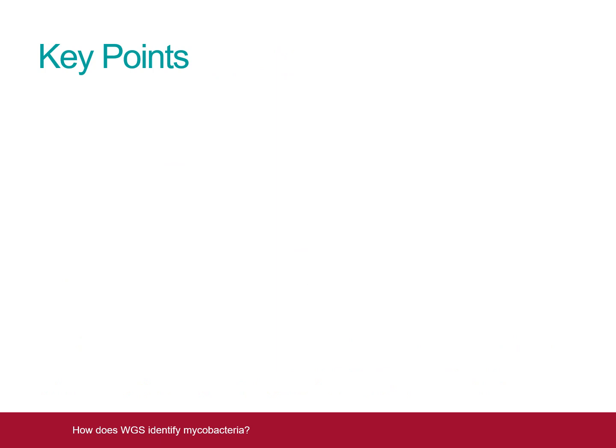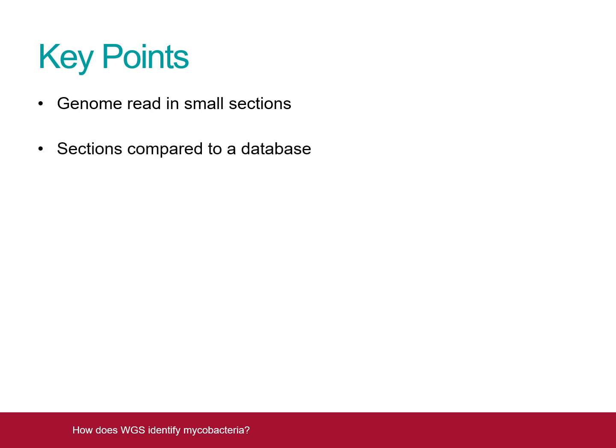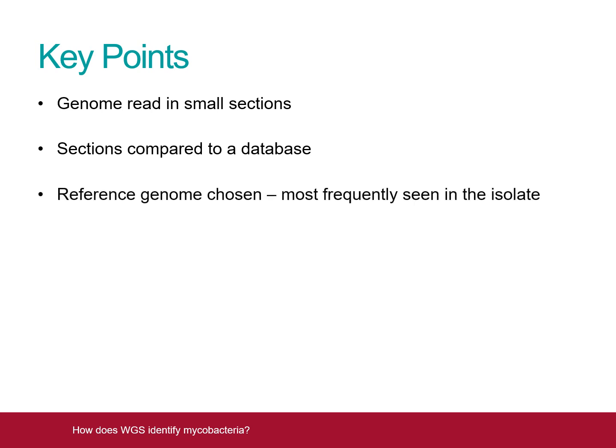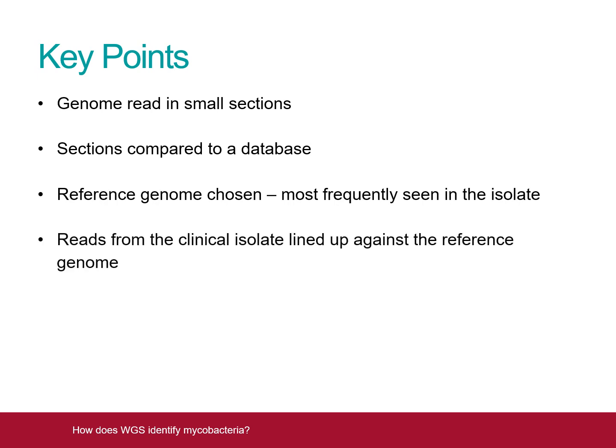In summary, the genome of the clinical isolate is read in small sections, not in one long continuous chain. These small sections are then compared to a large database of sequences unique to various bacterial species. The species for which most unique sequences are found is chosen as the reference. Then the reads from the clinical sample are lined up, or mapped, against this reference genome. And if the coverage and depth of the reading are high enough, the species is confirmed.